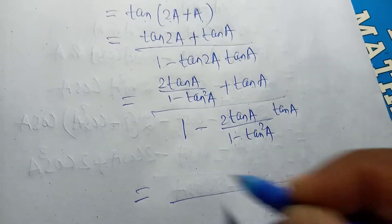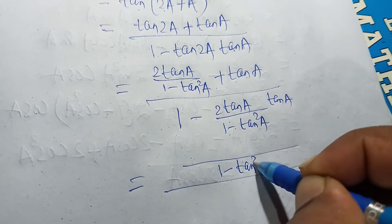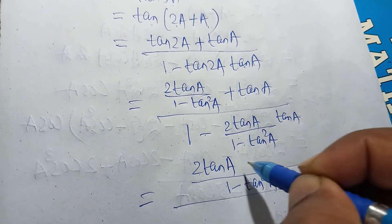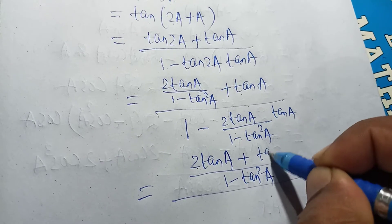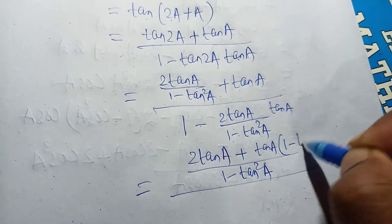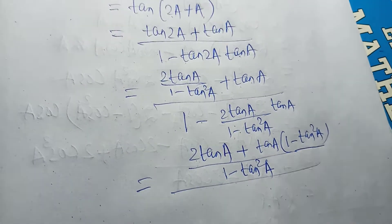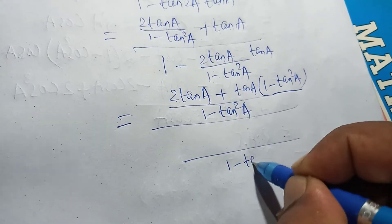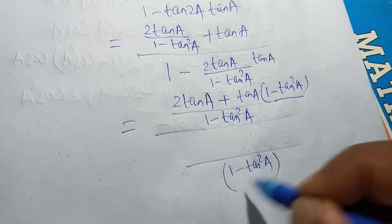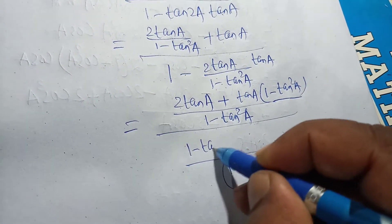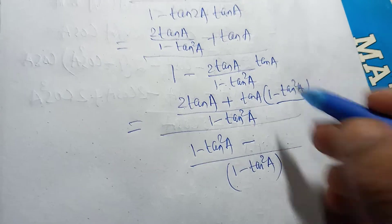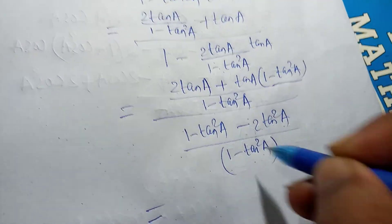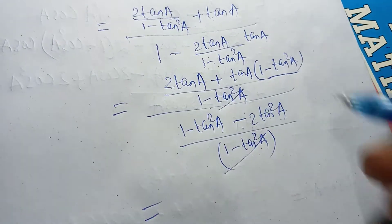Now, in the numerator, the LCM is 1 minus tan square a. So the numerator becomes 2 tan a plus tan a into (1 minus tan square a). In the denominator, the LCM is also 1 minus tan square a. The denominator becomes (1 minus tan square a) into 1, minus 2 tan a into tan a, giving 1 minus tan square a minus 2 tan square a. The (1 minus tan square a) terms cancel.